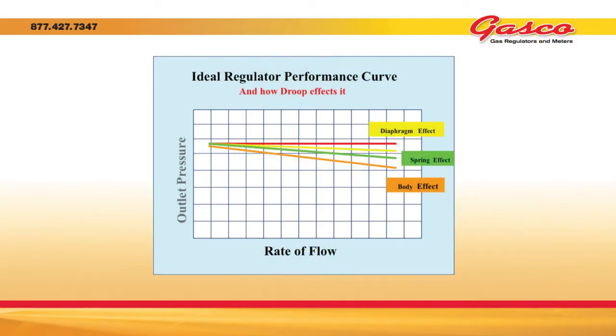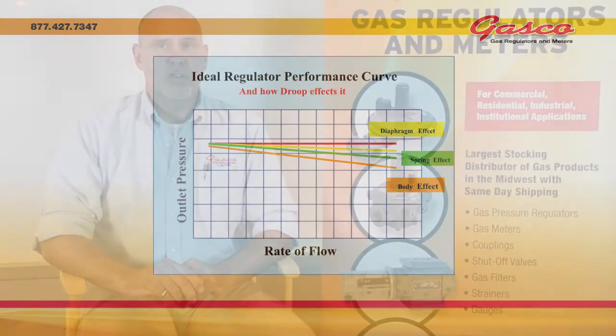If a manufacturer could construct an ideal regulator, the performance curve would look like a straight line curve. An ideal regulator would not be affected by the mechanics of the regulator. The horizontal axis at the bottom of the graph shows the rate of flow, and the vertical axis shows the outlet pressure. As the rate of flow increases, the outlet pressure would not change.